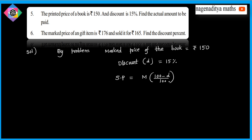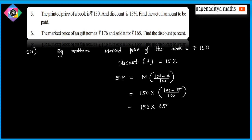Selling price is equal to MP into (100 minus D) by 100. So this is equal to 150 into (100 minus 15) by 100, which is 150 into 85 by 100.